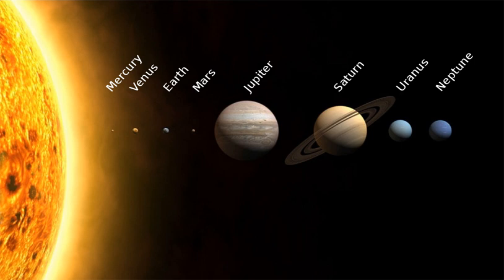All eight planets have almost circular orbits that lie within a nearly flat disk called the ecliptic. The solar system also contains smaller objects. The asteroid belt, which lies between the orbits of Mars and Jupiter, mostly contains objects composed, like the terrestrial planets, of rock and metal. Beyond Neptune's orbit lie the Kuiper belt and scattered disk, which are populations of trans-Neptunian objects composed mostly of ices, and beyond them a newly discovered population of sednoids.